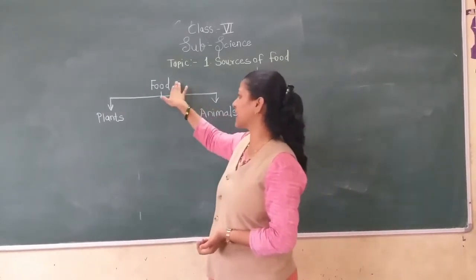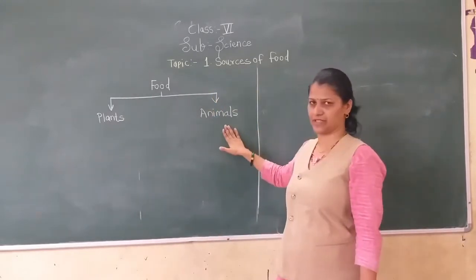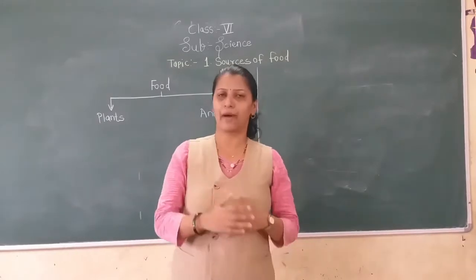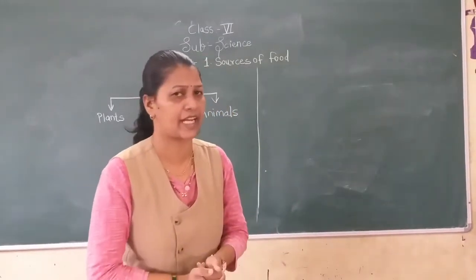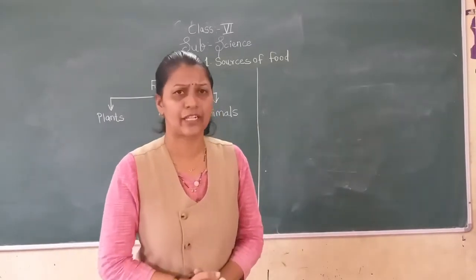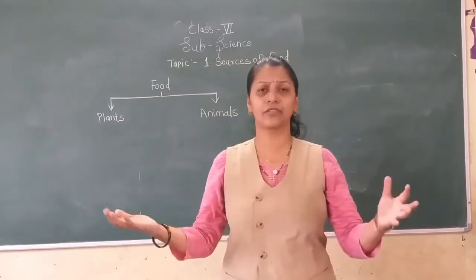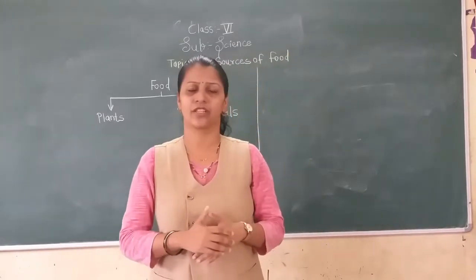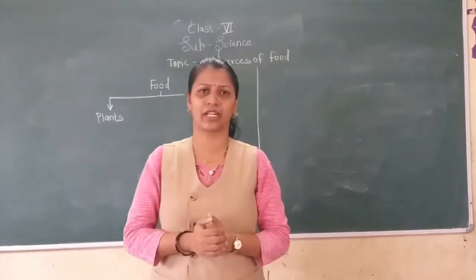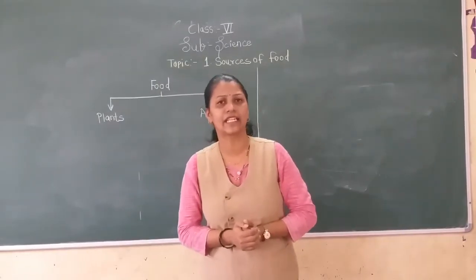We get mainly food from plants and animals. In the last video I told you about where we get food. Now, to prepare any kind of food variety we need different food items. Such food items when they come together are called ingredients.